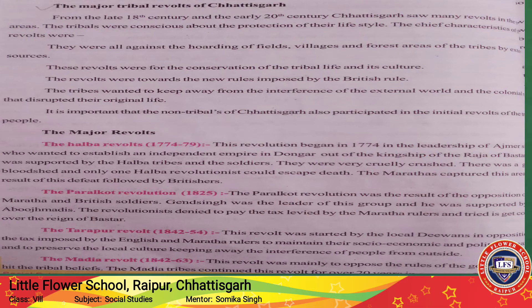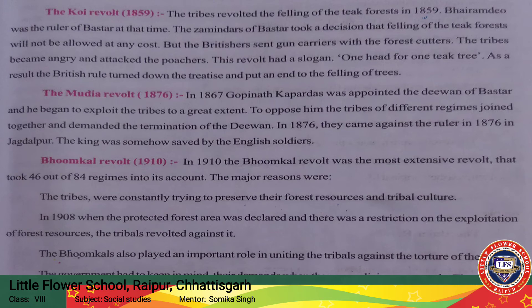Gend Singh was the leader of the Paralkot Revolution and he greatly supported Abujhmad. The Tarapur Revolt lasted from 1842 to 1854. This revolt was started by local divans in opposition to Maratha and English rulers, and was launched to maintain socio-economic and political stability. The Marya Revolt from 1842 to 1863 opposed government rulers who hurt tribal beliefs. The Koi Revolt of 1852: at that time, Bhairamdev was the ruler of Bastar, and the zamindars took early action.